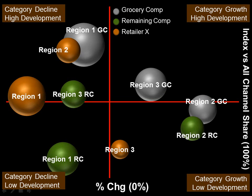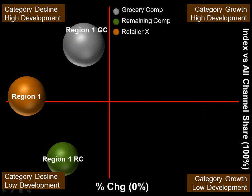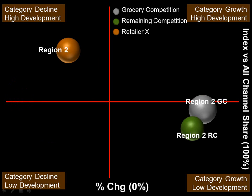Now I can see how region 1 for the retailer is doing versus grocery competition, and I can see that grocery competition in the grey ball is much more developed than retailer X. Retailer X is also the furthest to the left, indicating that they're behind competition in terms of percent change versus year ago. Even though the category is down for everyone, they're losing market share because everything is to the left of the axis, but retailer X is furthest left. Region 2 is where retailer X is more developed than their competition based on ACV — they're above that midline point on the vertical axis — but they're losing share because their competition is at a much higher percent change versus year ago.